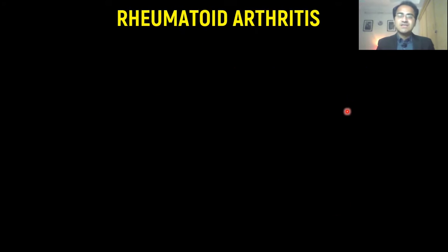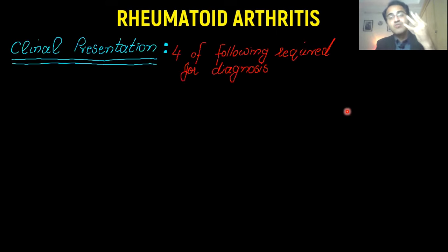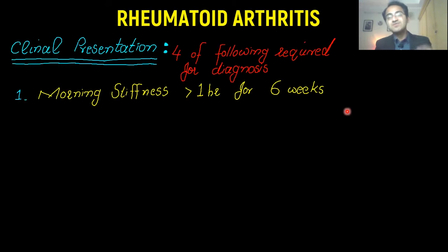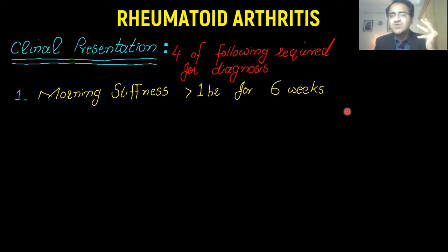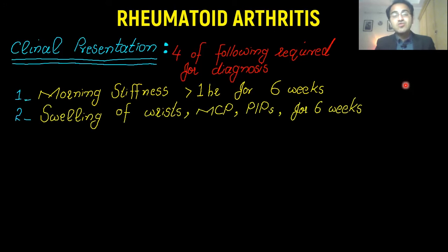For the diagnosis of rheumatoid arthritis, you need four points out of the following criteria. The patient should have morning stiffness greater than one hour for at least six weeks. The differentiating factor from osteoarthritis is that osteoarthritis has morning stiffness of less than one hour — about 20 to 30 minutes — whereas in rheumatoid arthritis morning stiffness is greater than one hour. RA causes swelling of the wrist, metacarpophalangeal joint, and proximal interphalangeal joint for six weeks.